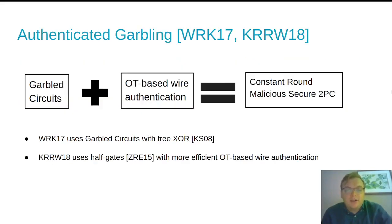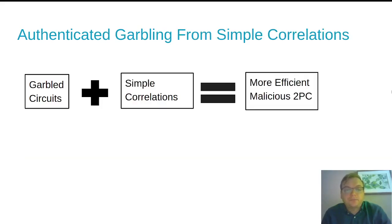The authenticated garbling work of Wang et al. and Katz et al. extended Yao's garbled circuits using an oblivious transfer-based form of wire authentication to give malicious secure two-party computation using FreeXOR in Wang et al., and then the half-gates of Zahur et al. in the follow-up work. We will replace that OT machinery with our simple correlations.